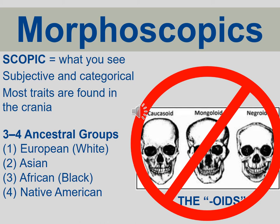We're going to go through a number of morphoscopic traits because those are the easiest to disseminate through our online environment and look at some images of how that variation manifests. Then I'll quickly and briefly talk about morphometrics and how they're applied. Morphoscopic — 'scopic' meaning what you can see, and morphology meaning shape or size of something observable — you put these into a number of different categories or bins of expression. They are subjective and categorical in terms of their data category, and most of them are found in the crania.